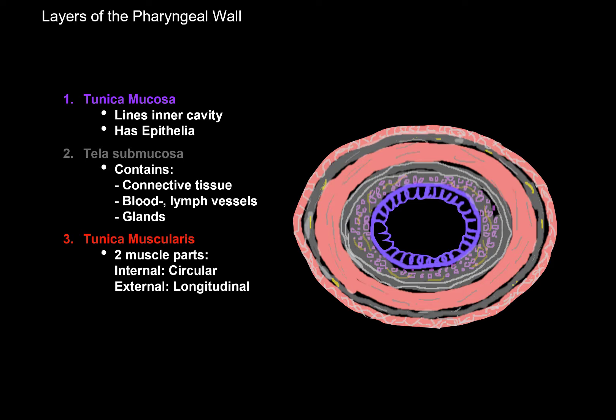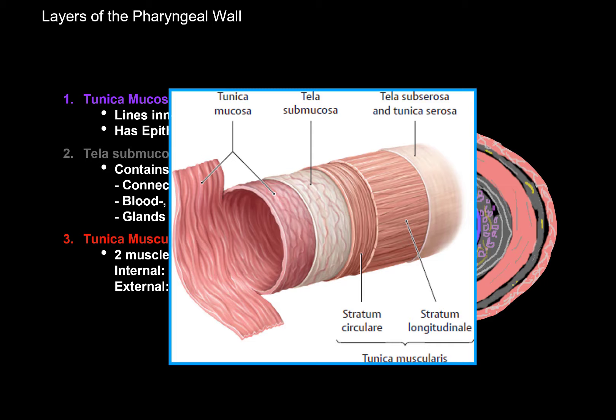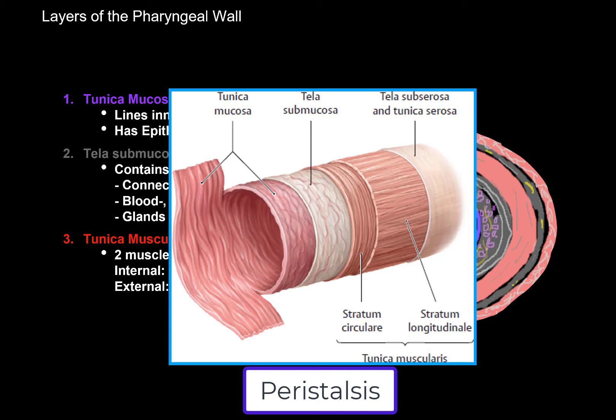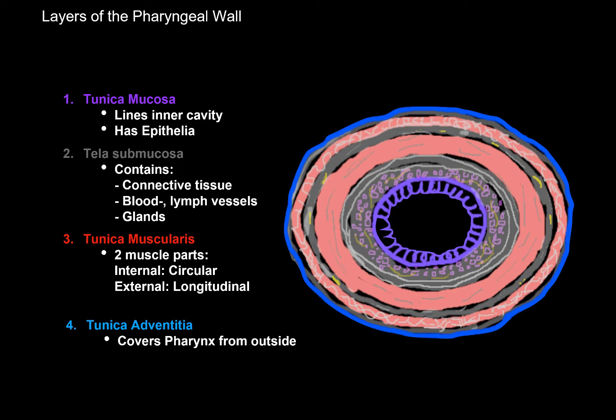The next layer is the muscle layer called tunica muscularis, consisting mainly of two types of muscle fibers. The inner muscle fibers are arranged circularly, and the outer ones are arranged longitudinally — this aids with pharyngeal peristalsis. Peristalsis is the controlled, synchronized contraction to help with the movement of content either in or out. The last layer is the tunica adventitia, which is a tough layer of collagen fibers that covers the pharynx from the outside.